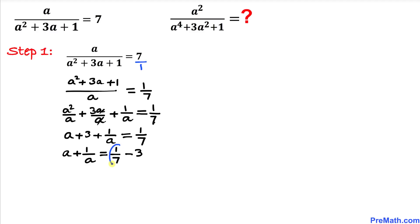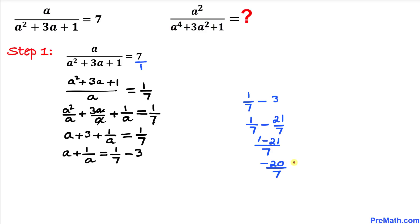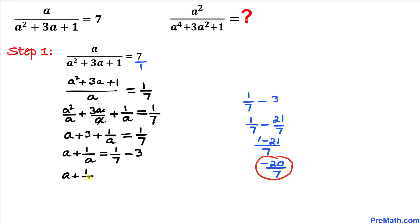Now let's simplify the right-hand side: 1 over 7 minus 3 turns out to be negative 20 divided by 7. So therefore a plus 1 divided by a equals negative 20 divided by 7. Let's call this equation number 1.